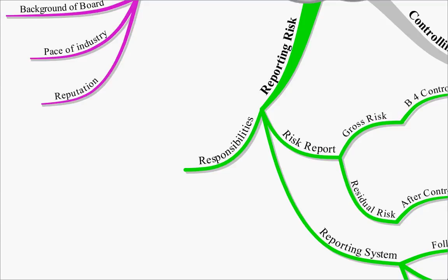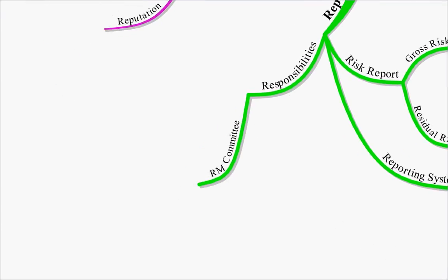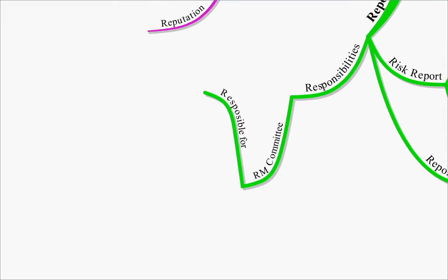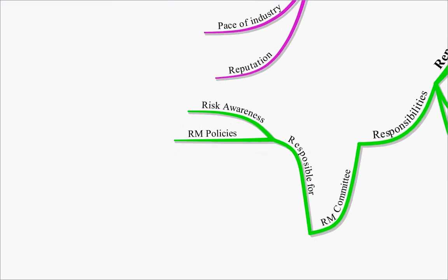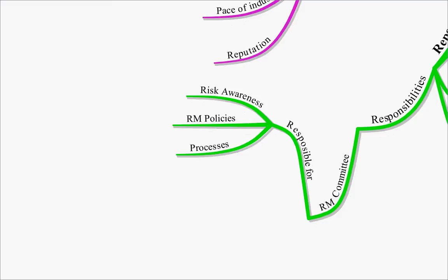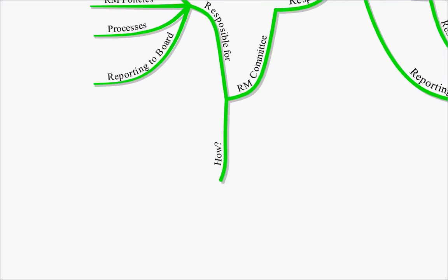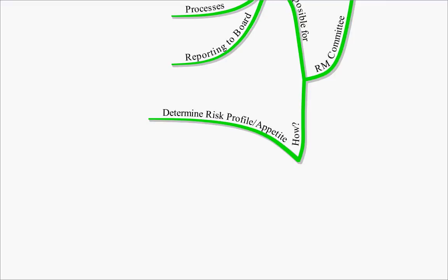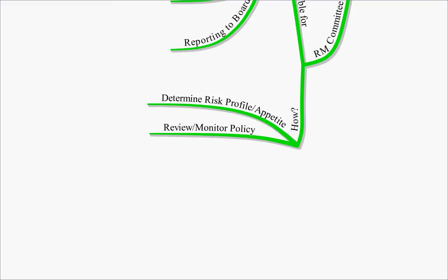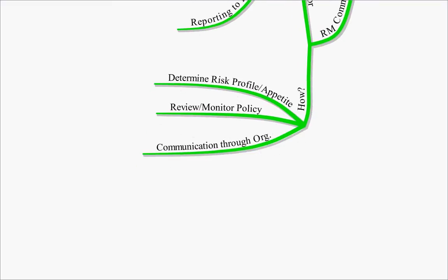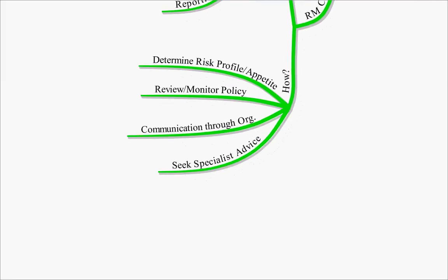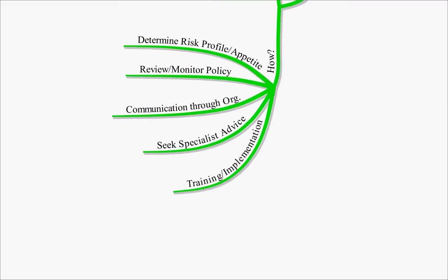The responsibilities throughout the firm for risks: firstly, we're going to have a risk management committee, responsible for risk awareness throughout the firm, risk management policies, the processes to control the risks, and reporting to the board. They will determine the risk profile or appetite of the firm, review and monitor the policies, communicate throughout the organisation — through enterprise risk management everyone must be aware of the risks — seek specialist advice for risks they don't have expertise in, and undertake training and implementation programs to make sure everyone knows what they're supposed to be doing.